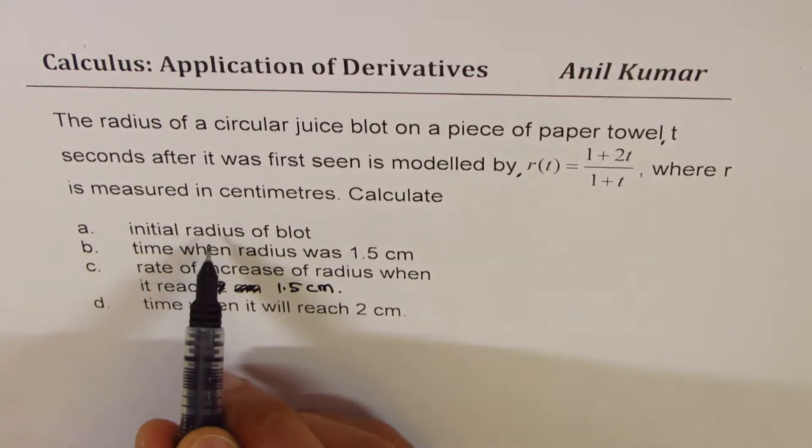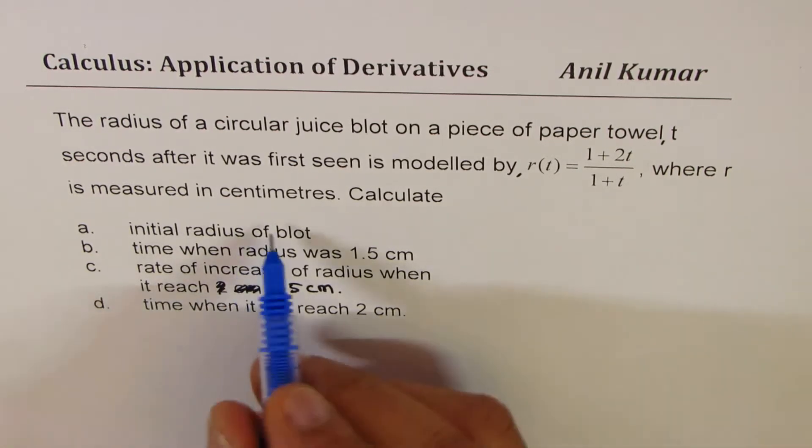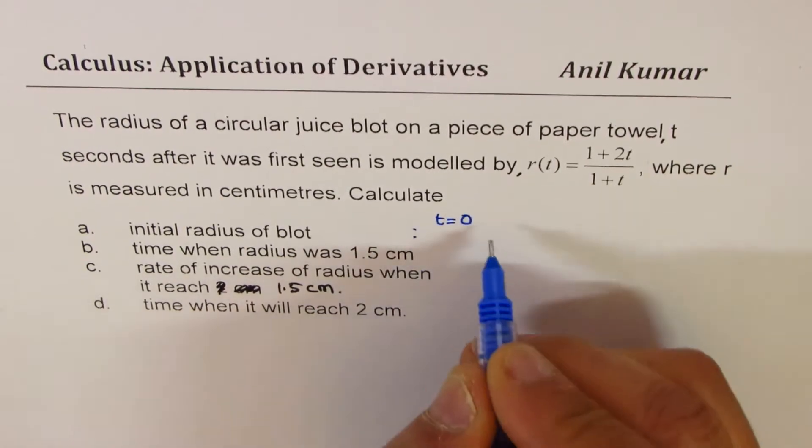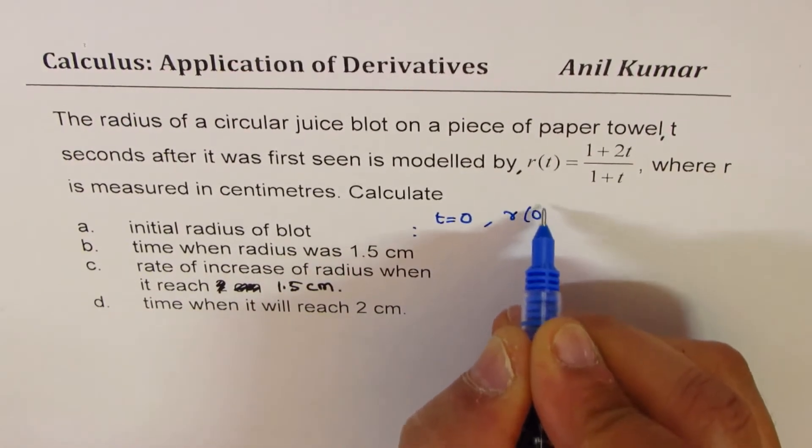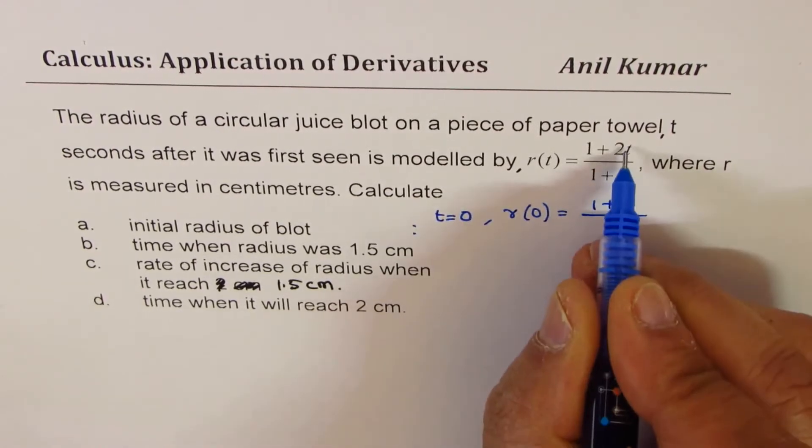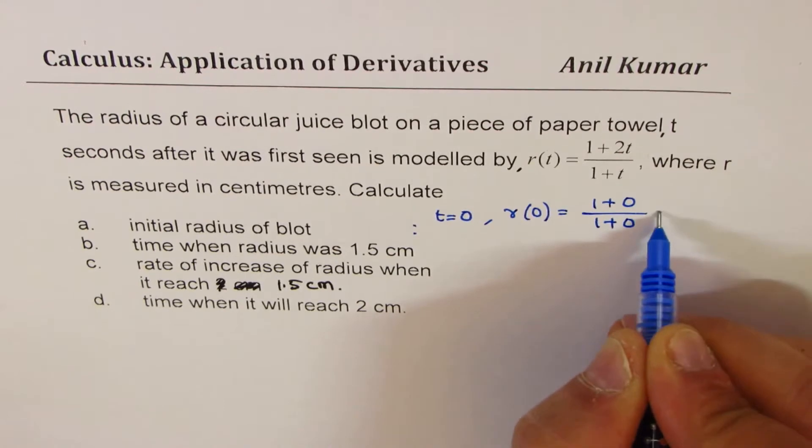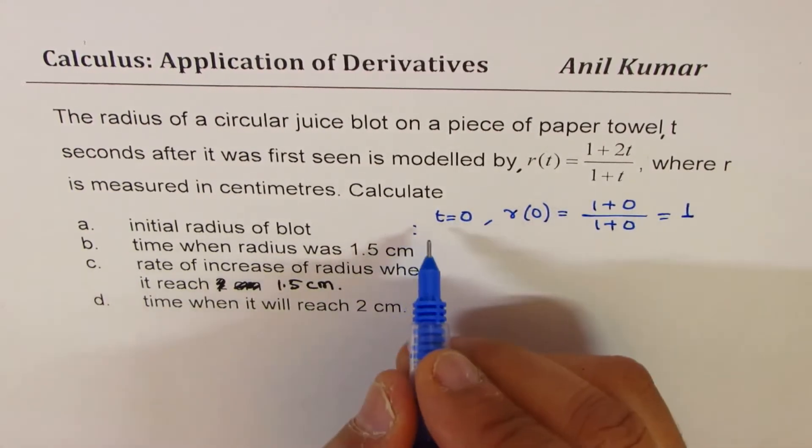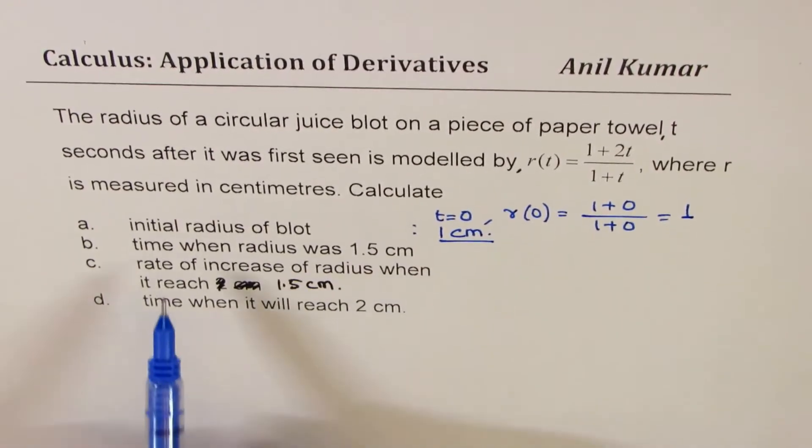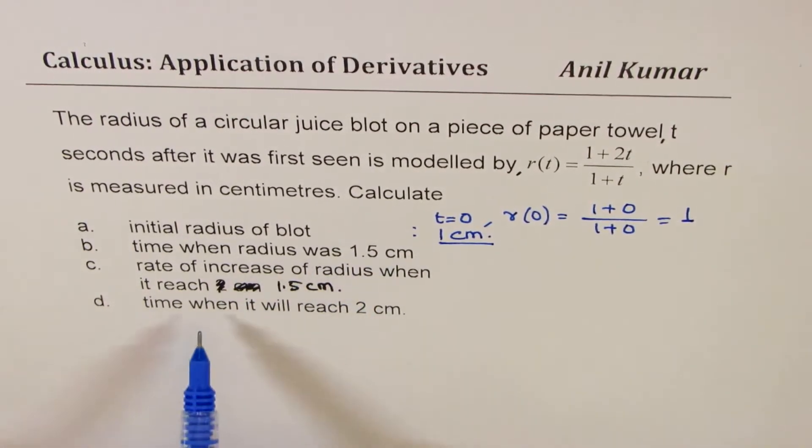To find the initial radius, what should you do? Initial means t = 0, right? So just substitute t = 0. We get r(0) = (1 + 0)/(1 + 0), so it is 1. The answer here is 1 centimeter.